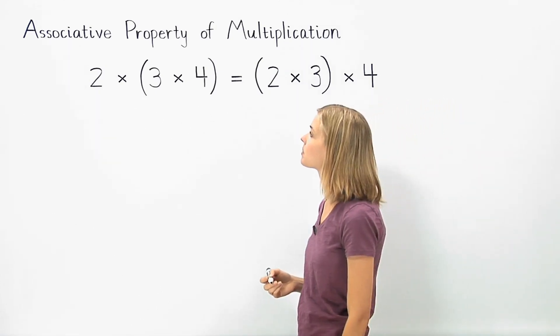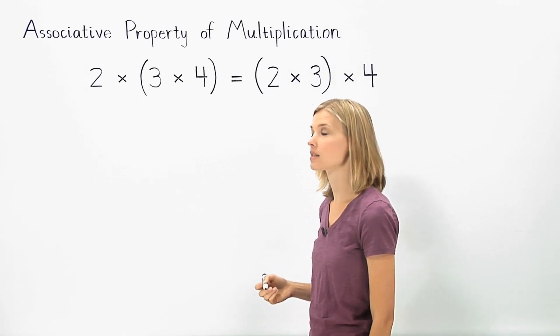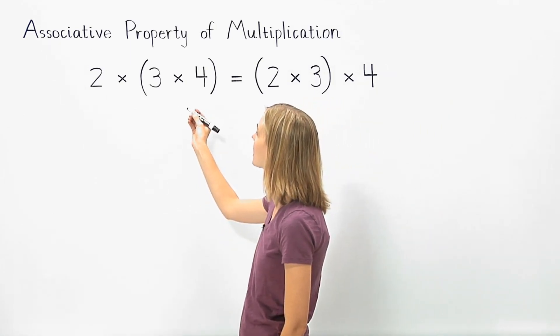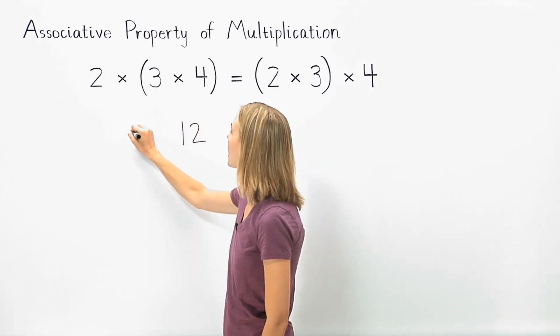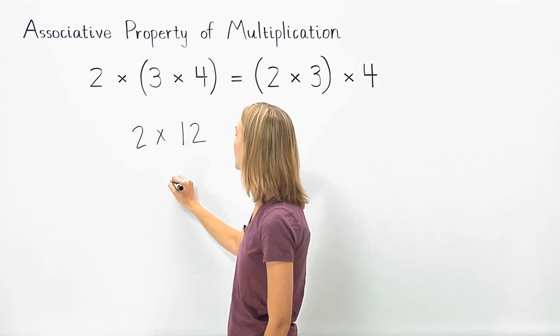On the left side of the problem, the order of operations tells us that we must simplify inside the parentheses first. So 3 times 4 is 12, and 2 times 12 is 24.